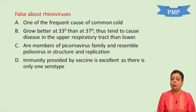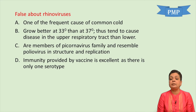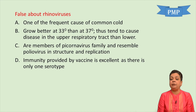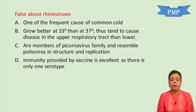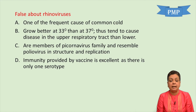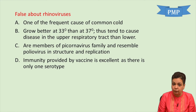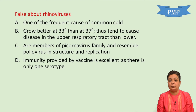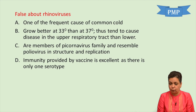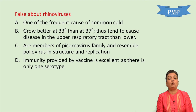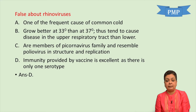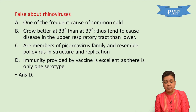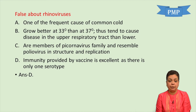MCQ: Which statement is false about rhinoviruses? They are the commonest causes of common cold — correct. They grow better at 33°C rather than 37°C — correct. They are members of picornaviruses and resemble poliovirus — correct. 'Immunity provided by the vaccine is excellent as there is only one serotype' — this is the false statement. There is no effective vaccine yet, precisely because of the large number of serotypes.